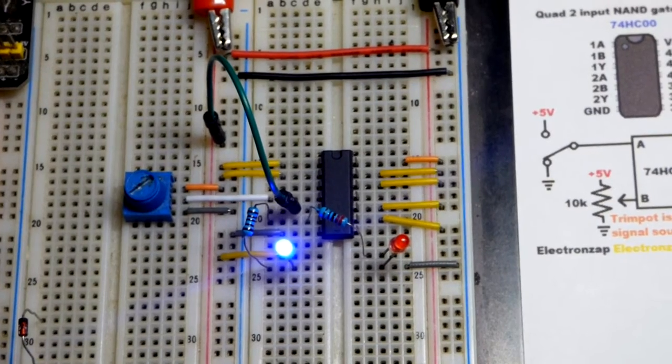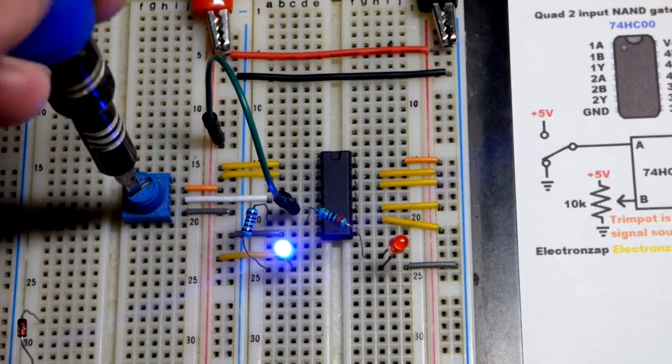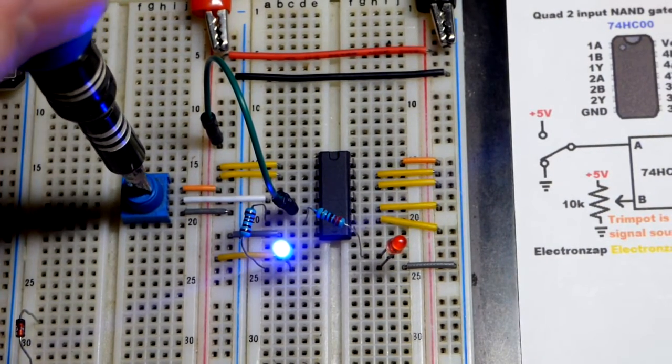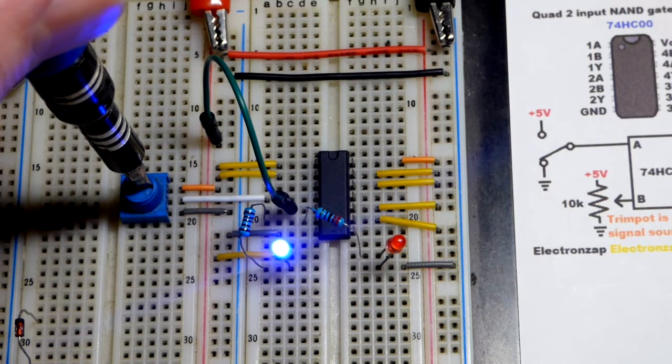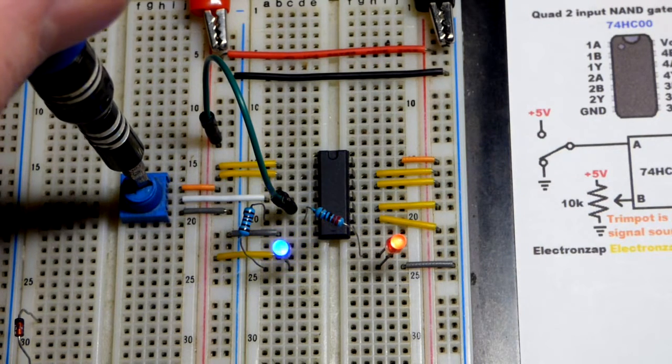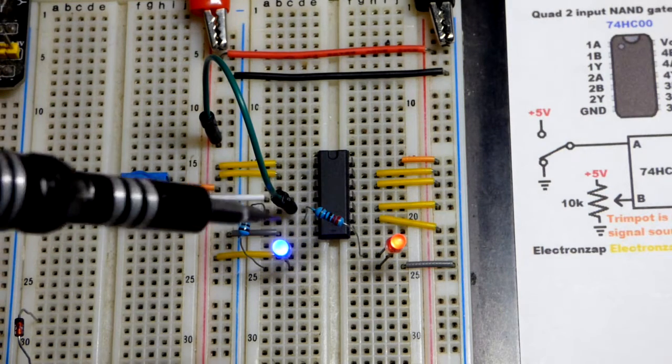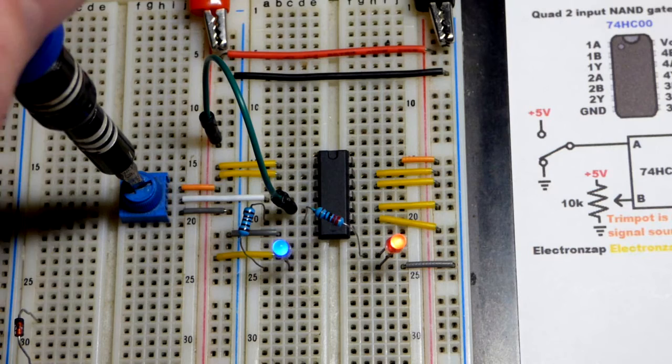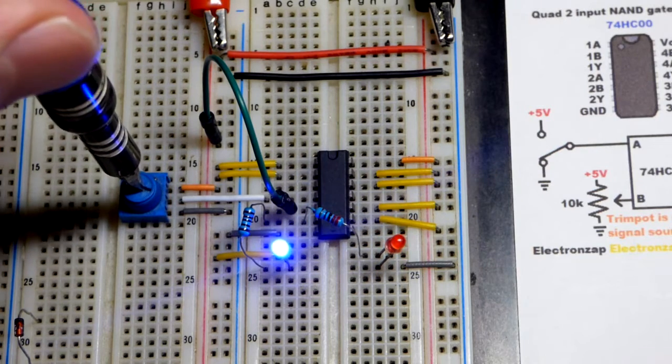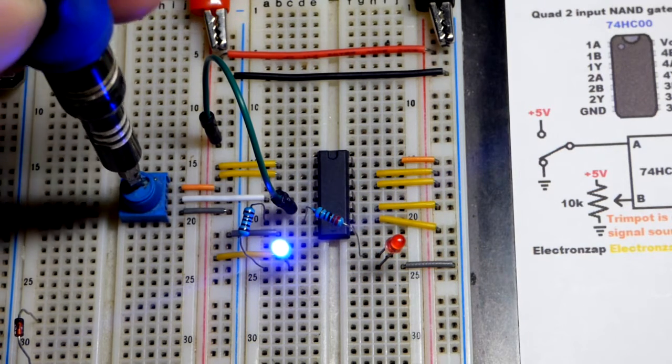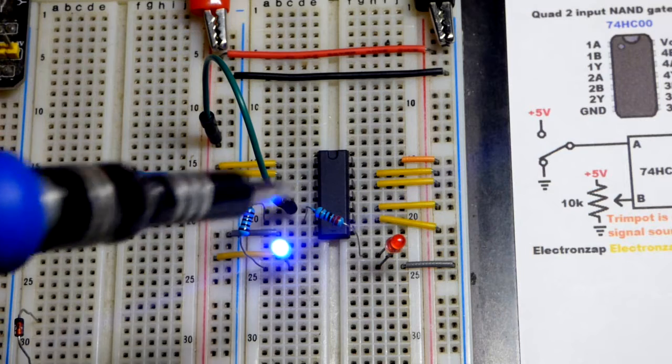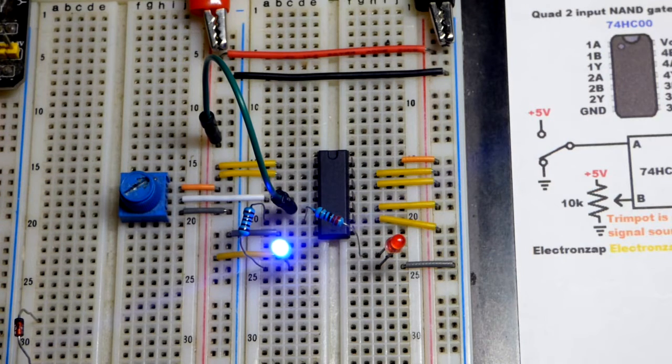One problem is there's no hysteresis, so having a voltage that slides like this isn't a very good idea. When I get about halfway, it looks like both LEDs are on, but they're actually oscillating back and forth rapidly. We don't have a solid high or low at that point. We're going to look at an integrated circuit in the next video that should take care of that problem.